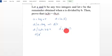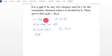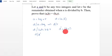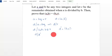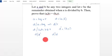Now from A equal to BQ plus R, let D' be GCD of B and R. Since D' divides BQ and D' divides R, D' divides their sum, which means D' divides A. So D' divides both A and B. Therefore D divides D' and D' divides D, which implies D equals D'.